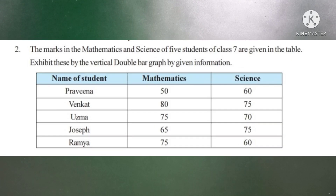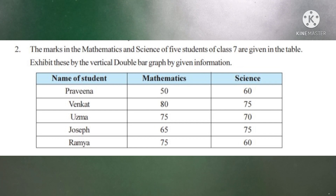Look at question number 2, children. The marks in mathematics and science of 5 students of class 7 are given in a table. Exhibit these by a vertical double bar graph using the given information. Here, one table with data is given. Class 7 students' data is provided.